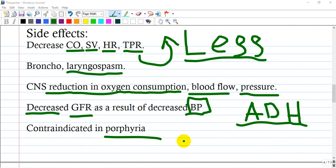Side effects of Thiopental: everything decreases—I can name it 'less.' For the cardiovascular system, cardiac output decreases, stroke volume decreases, heart rate and total peripheral resistance decrease. For this reason, a patient can encounter some reflex tachycardia.